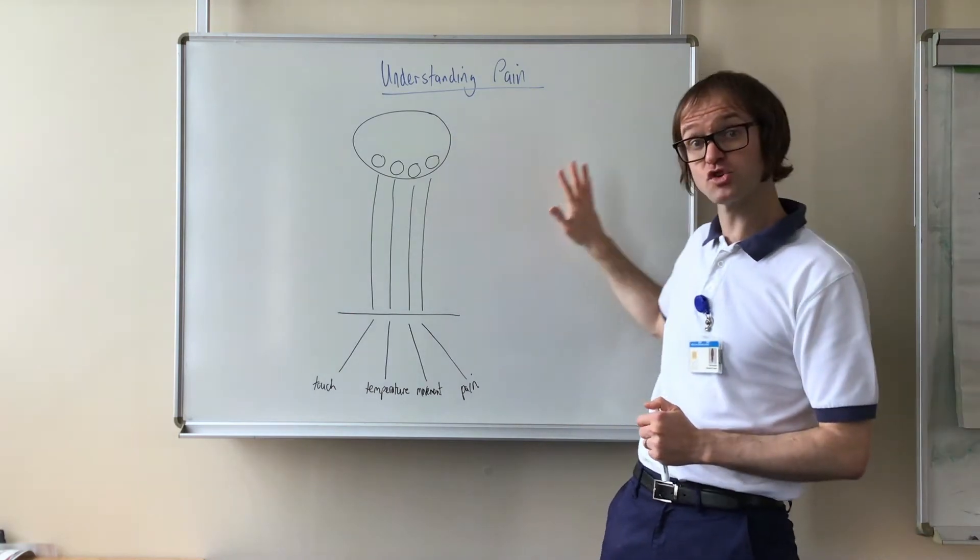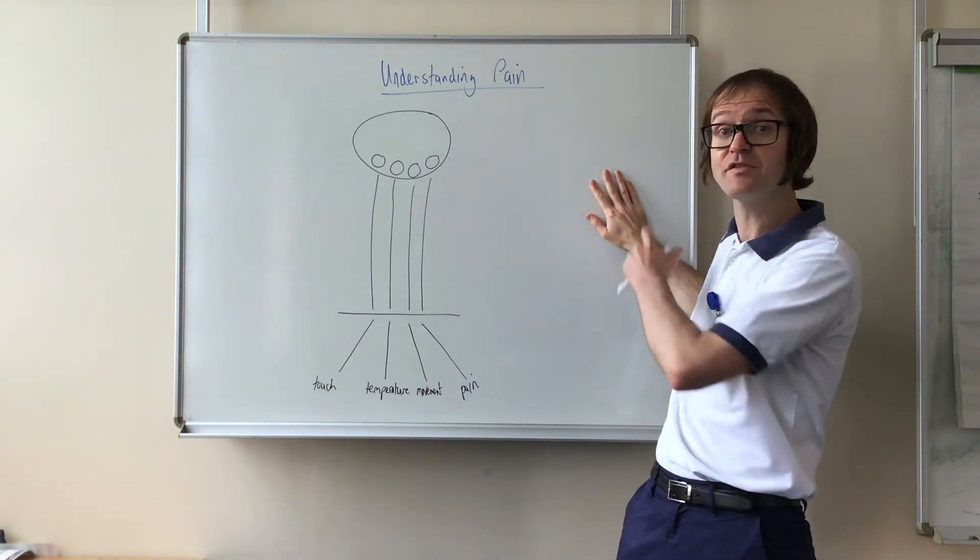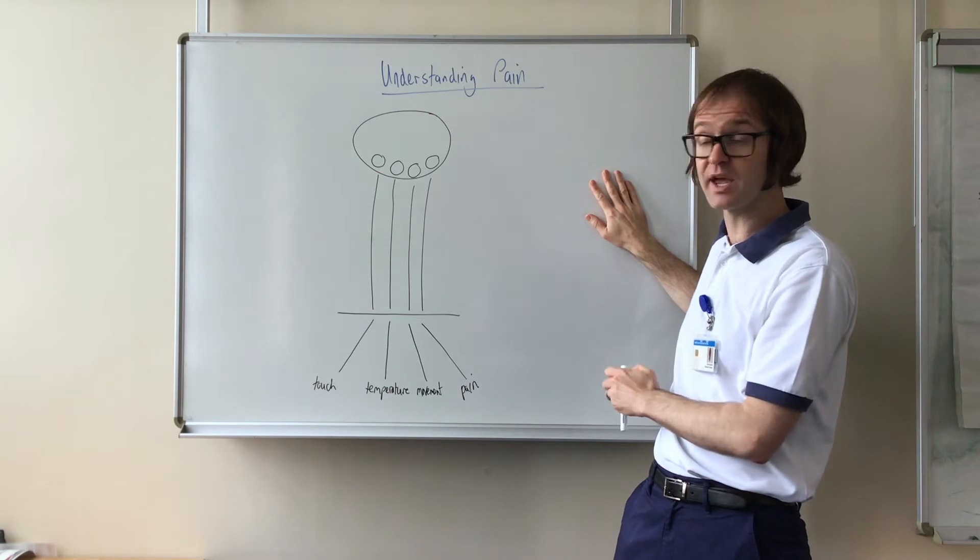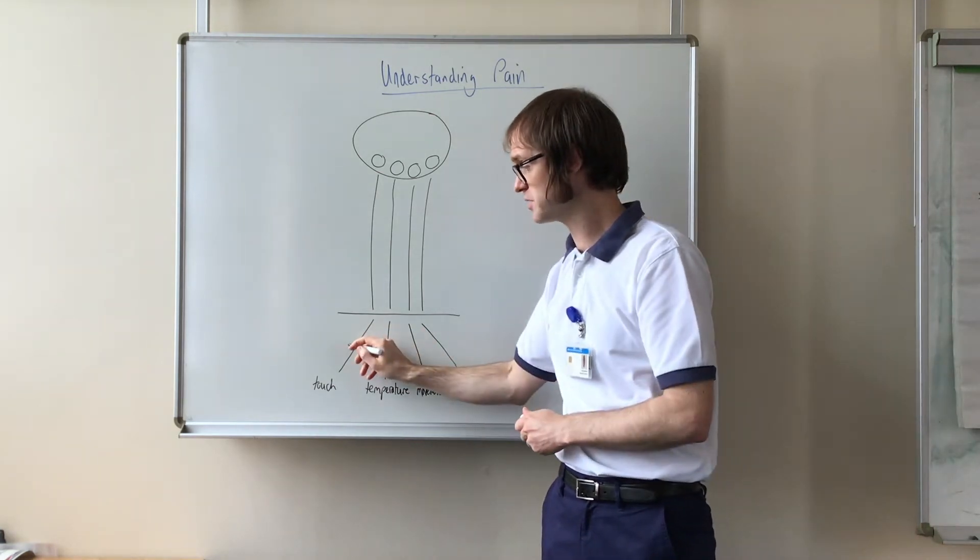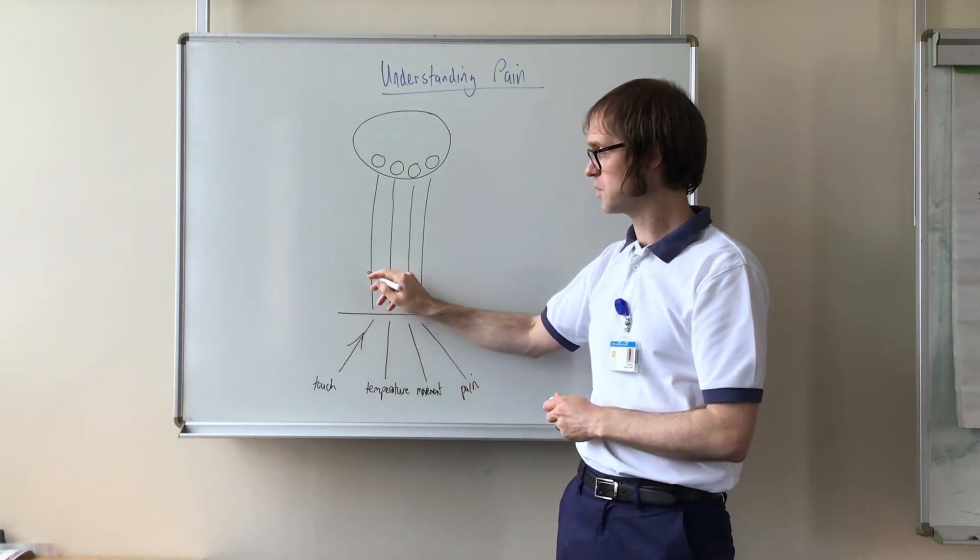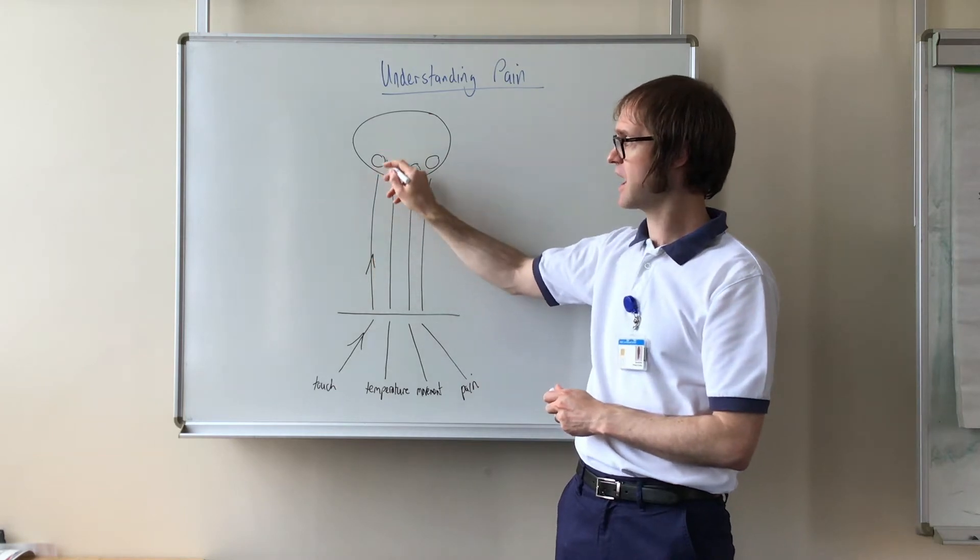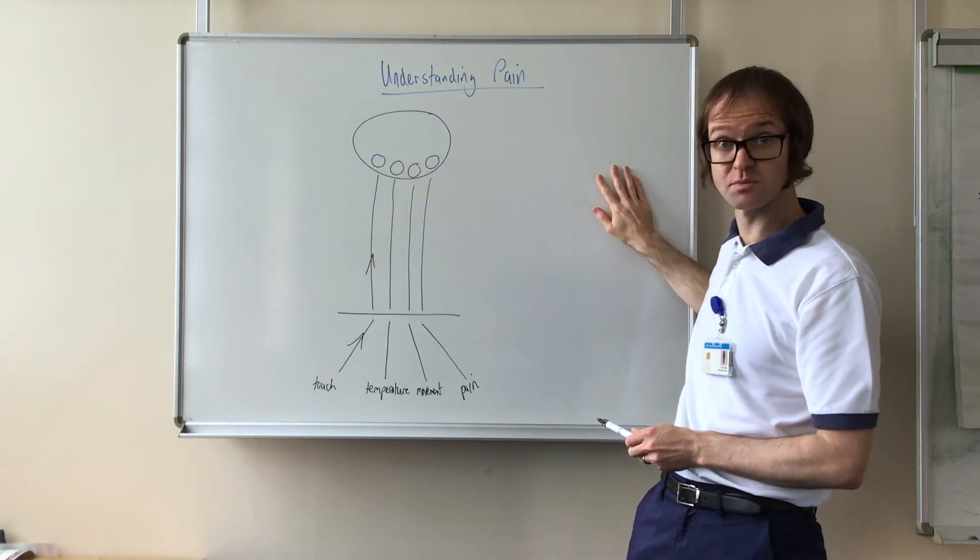So as an example, if I touch something like this board, even though I don't need to see that I'm touching it, the message gets sent up to the spinal cord where the message goes up to that area of the brain that tells me that I'm touching something.